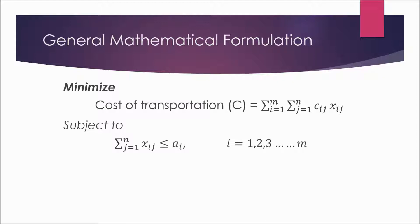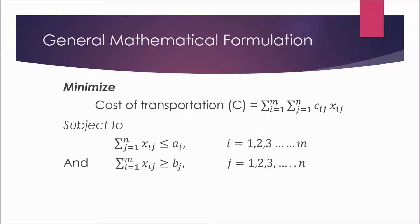This is subject to two constraints. The first constraint is on the supply side: since ai is the maximum supply available at the sources, the first constraint is that summation of xij must be less than or equal to ai, meaning the total supply transported to the destinations must not exceed the maximum supply available.